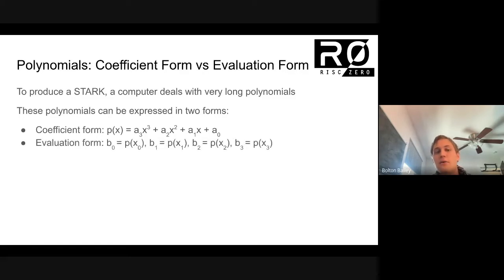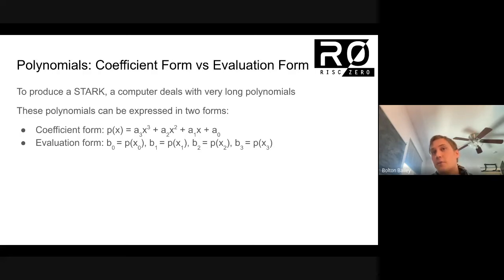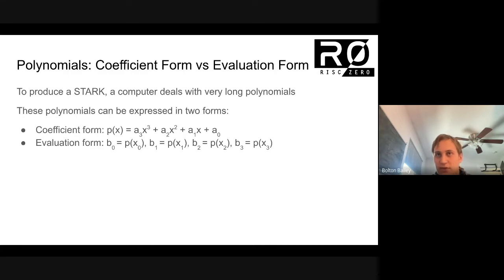The other way you could write down a polynomial is in evaluation form. You can evaluate a polynomial at several points. A polynomial is a function — you can give it a number and it spits out another number, or you can give it a finite field element and it will spit back out another finite field element. And if you take four different locations and evaluate the polynomial at those locations, that's essentially as good as giving you the polynomial coefficients.